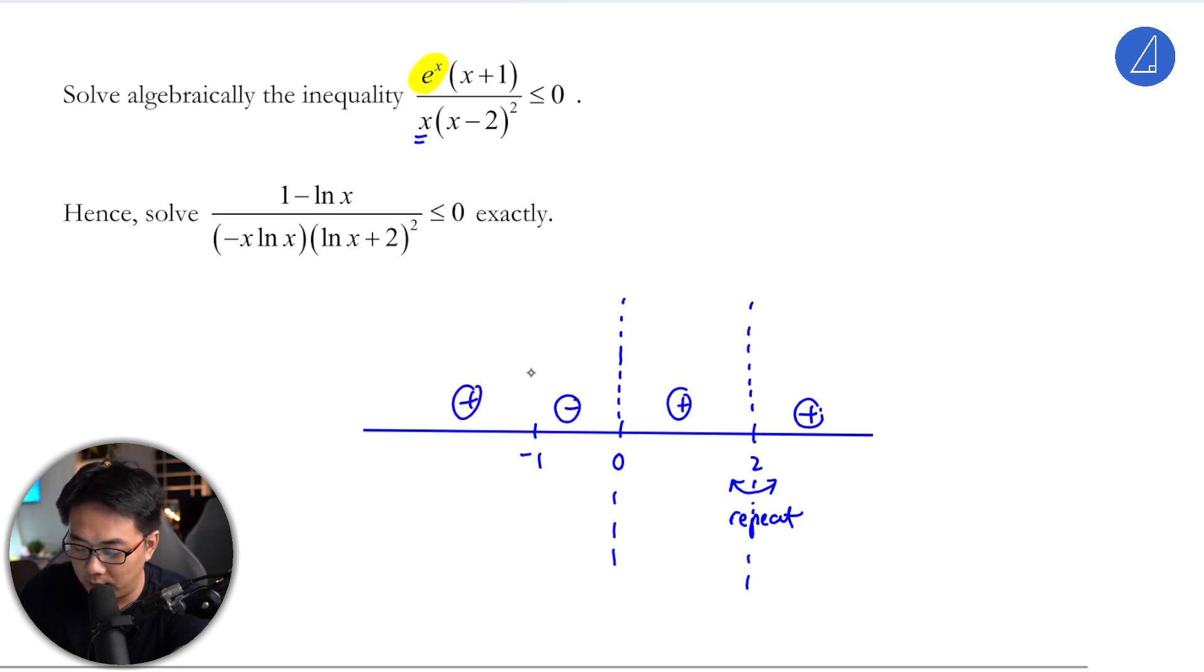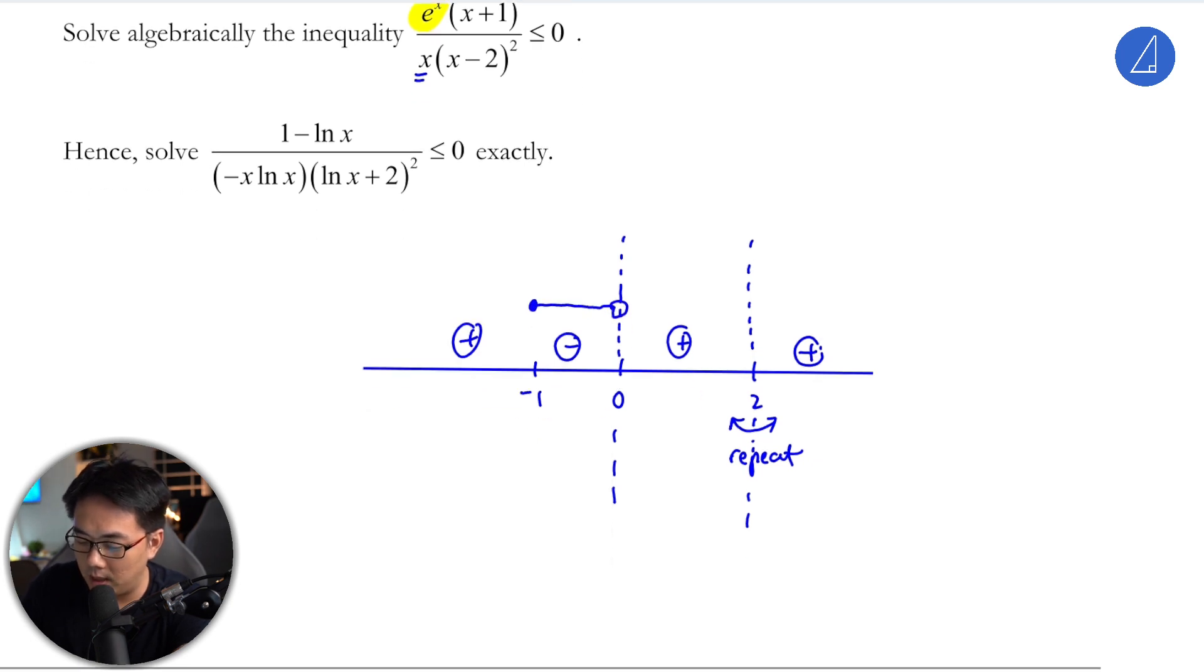The region that we want to find is the negative region, so it's here to here. Hence, algebraically, the solution set would be x real value, negative one less than x less than zero.